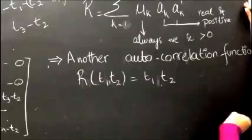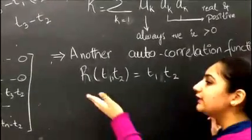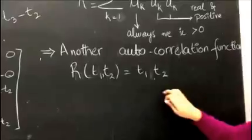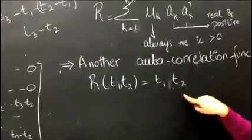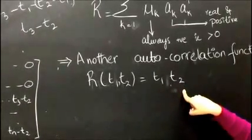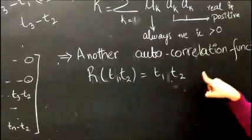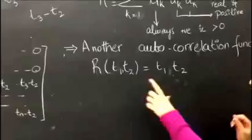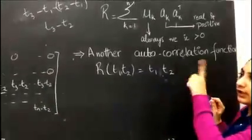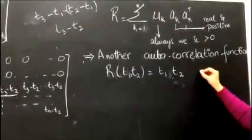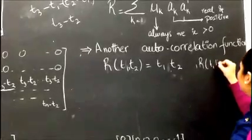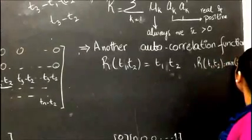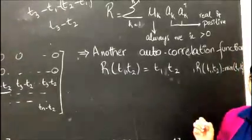So we have proved that min(t1, t2) is an autocorrelation function. Now considering another autocorrelation function of t1 and t2, which is the product t1 * t2 — since this would also be positive all the time, this is also a valid autocorrelation function. If we take a linear combination of this autocorrelation function and the initial one, R(t1, t2) = min(t1, t2), we will get another autocorrelation function.